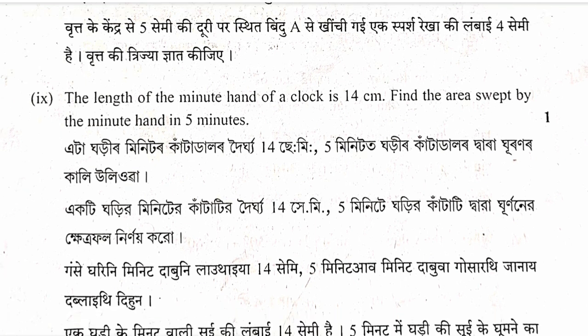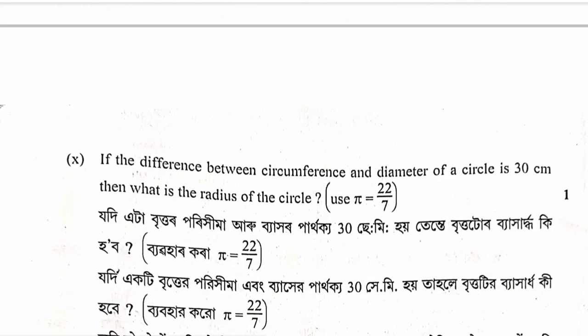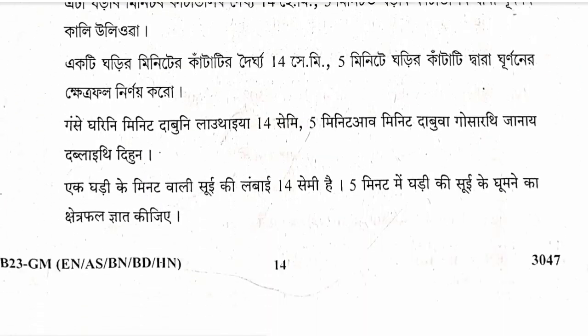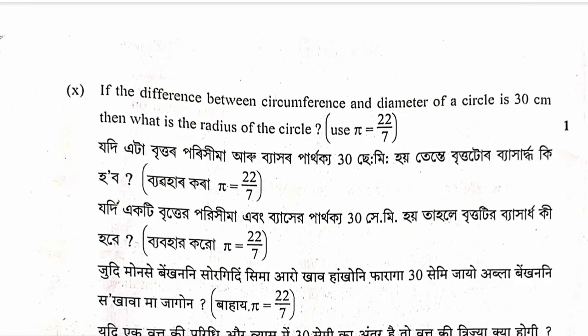Question: If the circumference of a circle is 30 centimeters, then what is the radius? Using circumference formula 2 pi r equals 30, solving for r gives the radius of the circle.